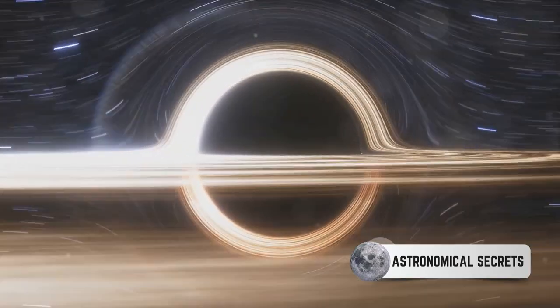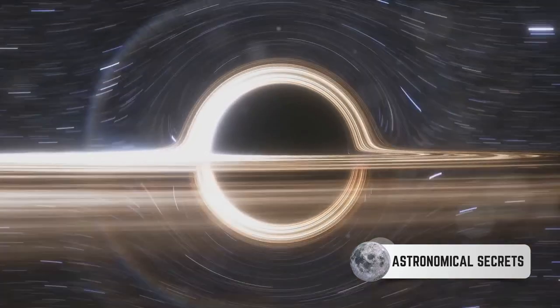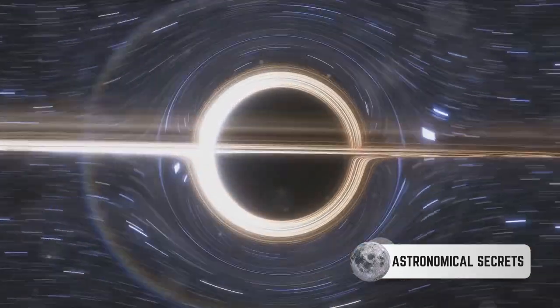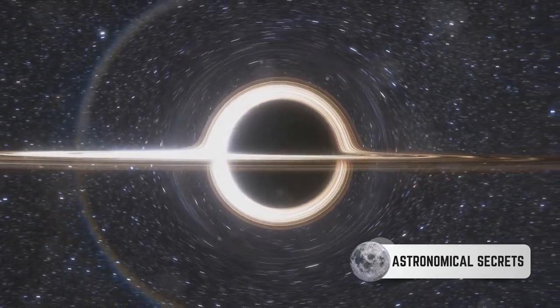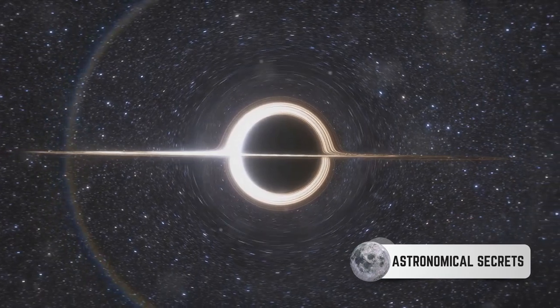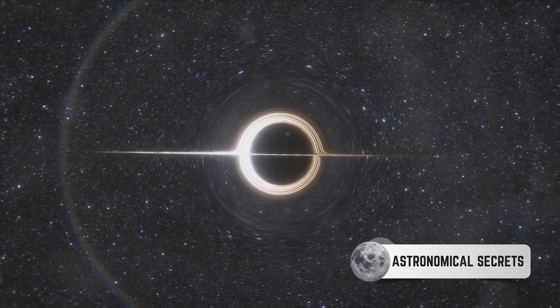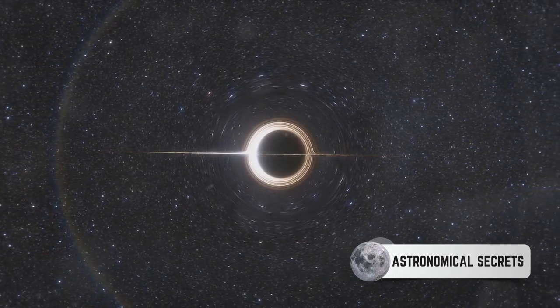Accretion disks also play a significant part in the creation of astrophysical jets. These are narrow beams of matter that are ejected from some black holes at nearly the speed of light. The matter in the accretion disk, as it spirals towards the black hole, gets twisted and churned, creating a magnetic field. This magnetic field is so strong that it propels some of the matter out in two opposite directions, forming these jets.